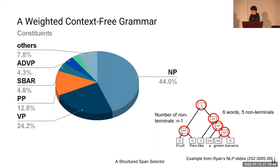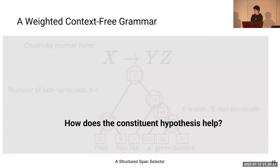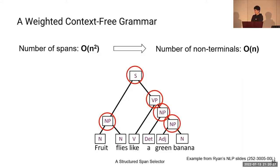Here are some statistics from the OntoNotes dataset development set among the n minus one constituents. The average proportion of each type is shown in the pie chart on the left. The spans considered in span selection tasks — coreference resolution, semantic role labeling, named entity recognition, extractive question answering — are all chosen from these constituents in the parse tree. With this hypothesis, we can reduce the number of spans considered in downstream tasks from n-squared to n.